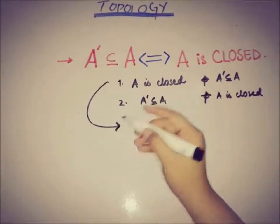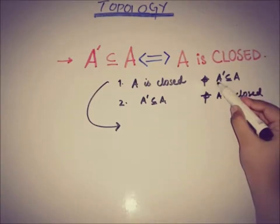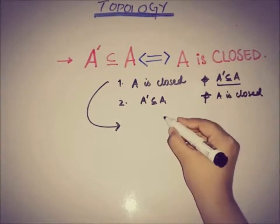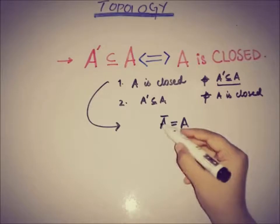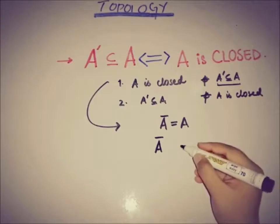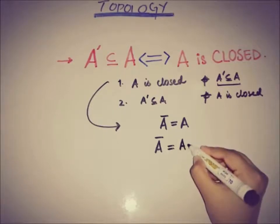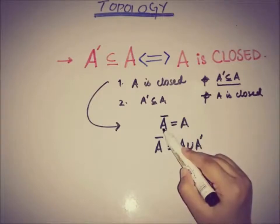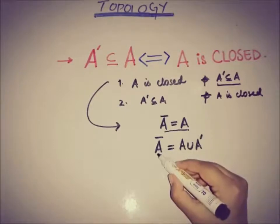For the first direction, it is given that A is a closed set, and our target is to show A' ⊆ A. We know that if a set is closed, then the closure of the set equals the set A. We also know the relation between the accumulation set and the closure: A̅ = A ∪ A'.